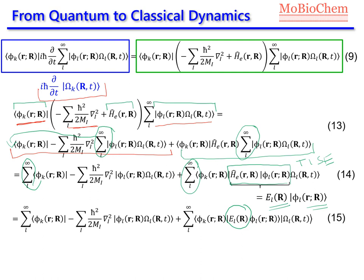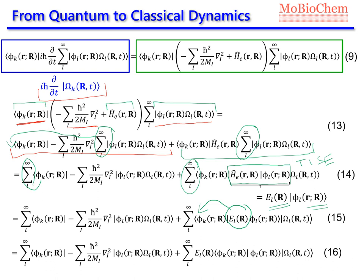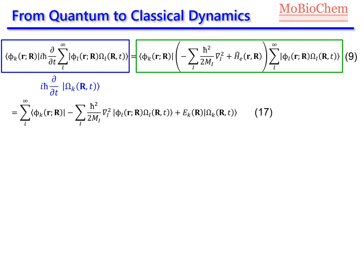The electronic energy doesn't depend on the electronic coordinates, so we can put it outside of the integral and get equation 16. Again, we have the product of two electronic wave functions, and using the orthonormality rule, equation 16 simplifies further. We get equation 17, where only when L is equal to K do we have a non-zero term.